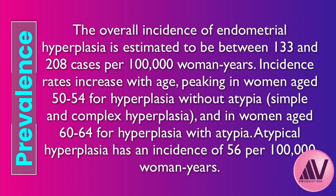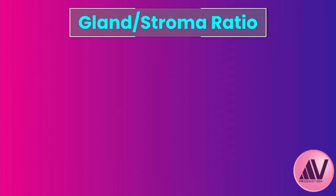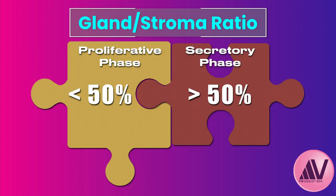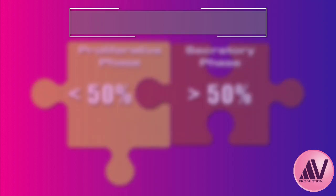To understand what's abnormal, we need the baseline. In the first half of the cycle — the proliferative phase, when estrogen is dominant — normally less than 50% of the tissue is glands. After ovulation in the secretory phase, progesterone kicks in and the glands become more developed, so the ratio goes up, usually over 50%. Understanding that normal ebb and flow helps us see where hyperplasia deviates.